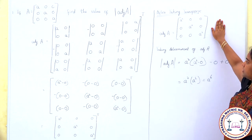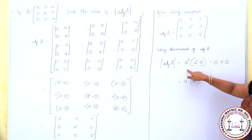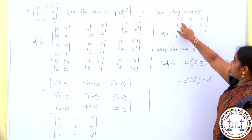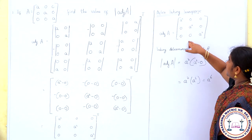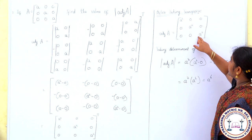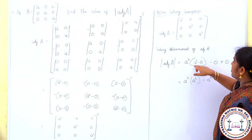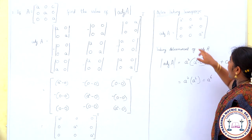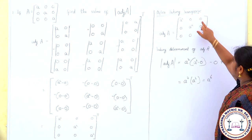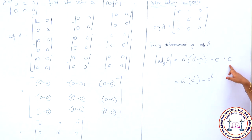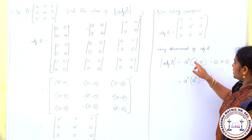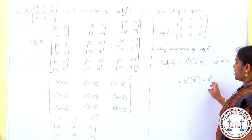After taking the transpose, we find the determinant of adj(A). The first row first column element A² is multiplied by A² times A², which is A to the power 4, minus 0. The other elements in the first row are 0, so they contribute nothing. Therefore A² times A⁴ gives A to the power 6. So the determinant of adj(A) is A⁶.